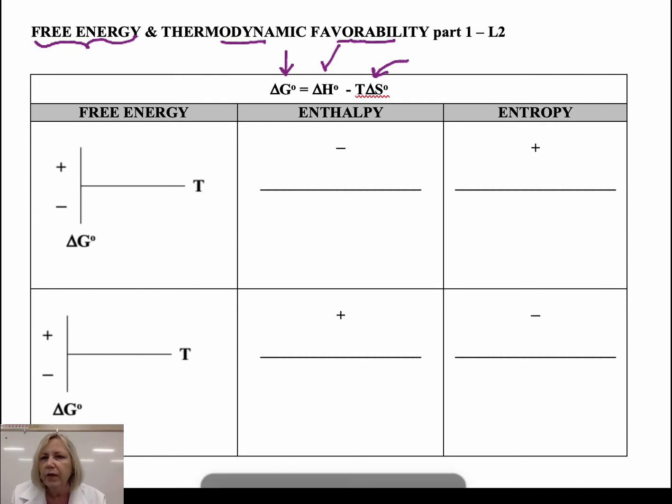And one of the things I want you to note here is that temperature magnifies the entropy. And so if I have a favorable entropy, I'm going to want a high temperature. If I have an unfavorable entropy, I'll want a low temperature. So that's very important to wrap your mind around there.